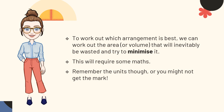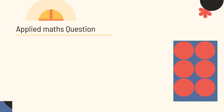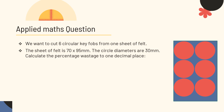Now, in order to work out which arrangement is best — if we're doing a project at school — we can work out the area or the volume that will inevitably be wasted to try to minimise it. That's going to require some maths, and when we do maths problems, do remember to include your units because you might not get the mark. So here's a simple applied maths question we can go through together. We want to cut six circular key fobs — the circles in red — from one sheet of felt in blue. The sheet of felt is 70 by 95 millimetres, the circle diameters are 30 millimetres. Calculate the percentage of waste to one decimal place.